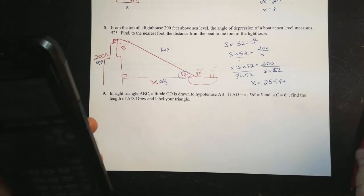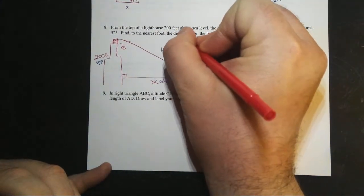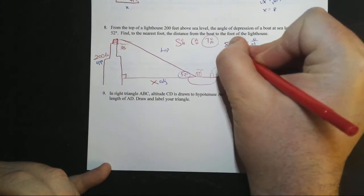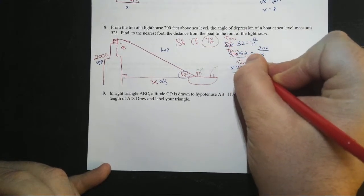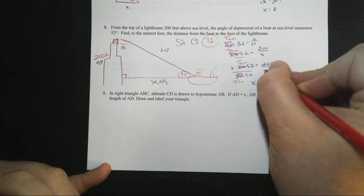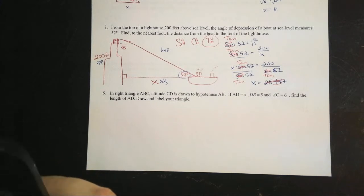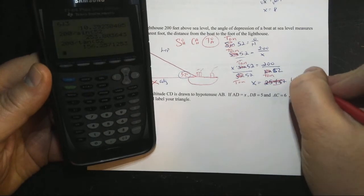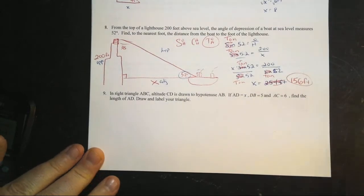Quick correction on problem eight: the sides involved are opposite and adjacent, so we must use tangent, not sine. Changing all sines to tangents: x = 200 / tan(52) ≈ 156. That matches the answer from last time. Half-credit deductions happen when students incorrectly use sine here instead of tangent.